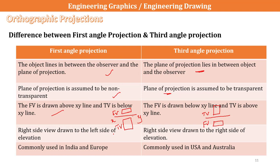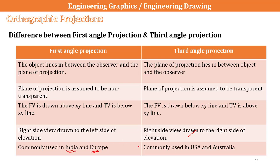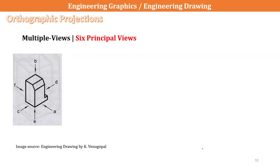Another key difference is side view placement. In first angle projection, the right side view is drawn to the left side of the elevation, and the left side view is drawn to the right side. In third angle projection, the right side view is drawn on the right side of the elevation. First angle projection is commonly used in India and European countries, while third angle projection is mostly used in the US and Australian countries.